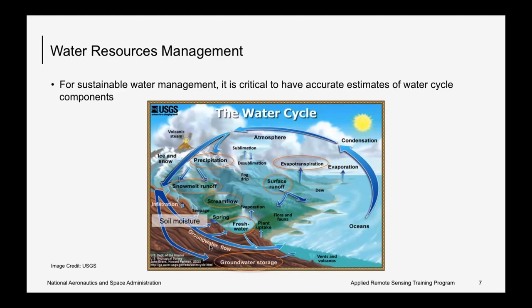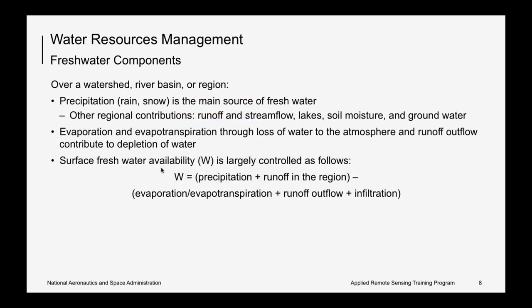This slide shows the water cycle. For sustainable water management, all water cycle components have to be known, including precipitation, snow melt, runoff, stream flow, soil moisture, evapotranspiration, and water transport across different reservoirs. So all these quantities have to be known for sustainable water resources management.